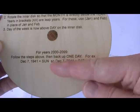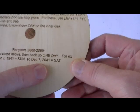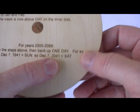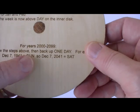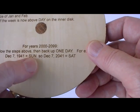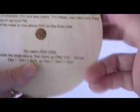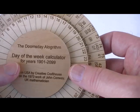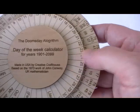And it does explain that in the years 2020 to 2029, let's say you're trying to calculate the day for December 7, 2041. The wheel will indicate that it is Sunday, so you back off one day. And the reason for that is the anchor date for the 21st century is on a Tuesday, and for the 20th century is on a Wednesday.